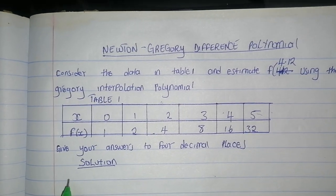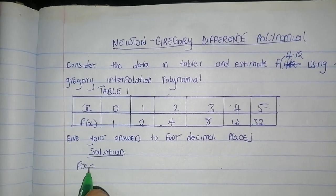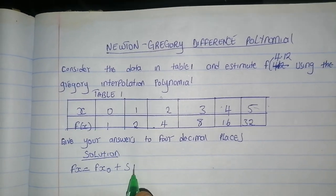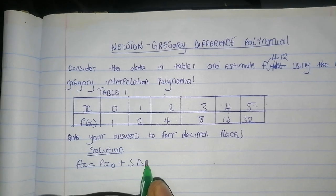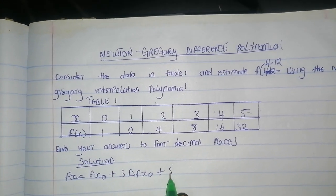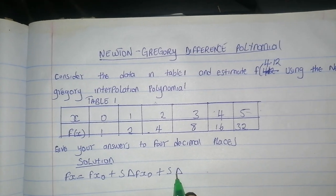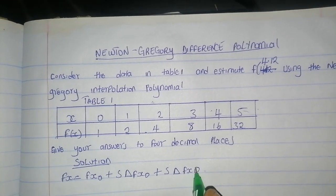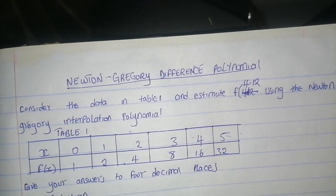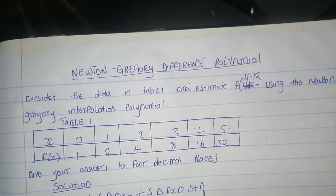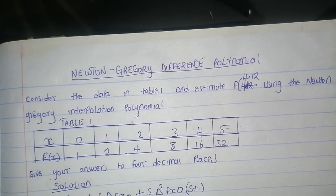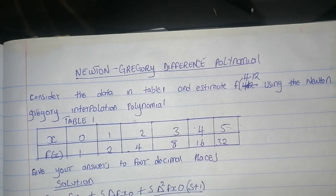f(x) equals f(x0) plus s delta f(x0) plus s times (s plus 1) delta squared f(x0) divided by 2 factorial. The formula continues like that.